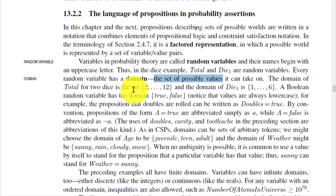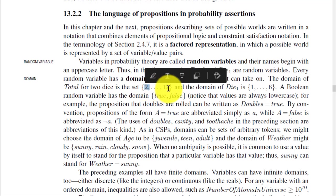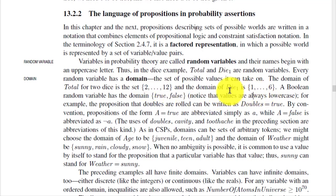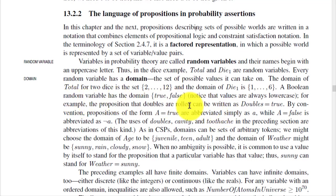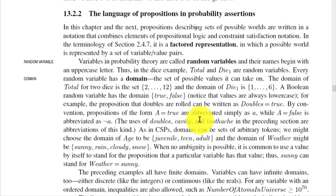The domain of two dice is the set of values from 2 to 12, and the domain of Die1 is from 1 to 6. A Boolean random variable has a domain of true or false. By convention, propositions of the form A=true are abbreviated simply as A, while A=false is abbreviated as ¬A.